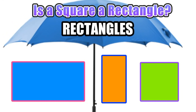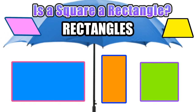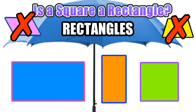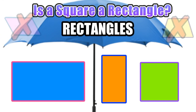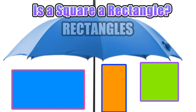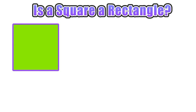You can also identify four-sided figures that are not rectangles — namely a parallelogram or a trapezoid — because they do not have four right angles.